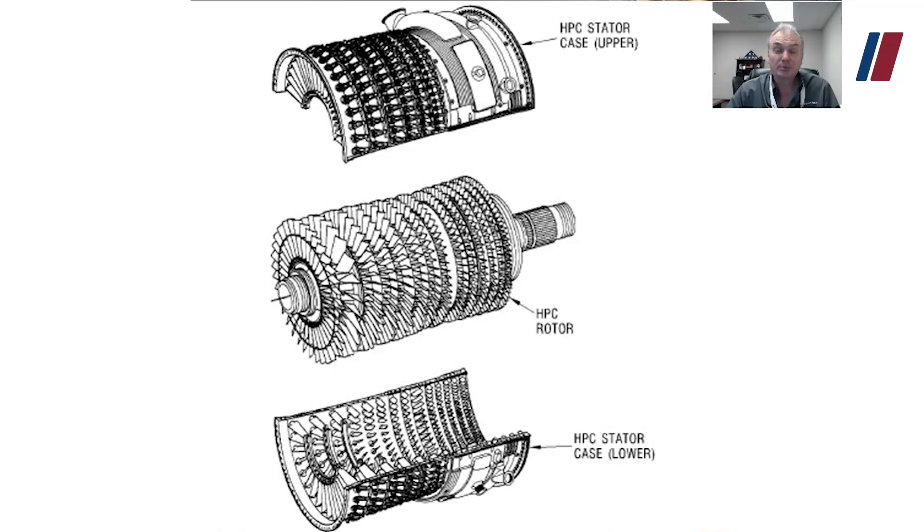The high-pressure compressor's purpose is to compress air for combustion, but it consists of two major components. The first component is the rotor, which mounts the blades, and the stator case, which houses the stator veins. The HPC consists of a 14-stage axial flow compressor.